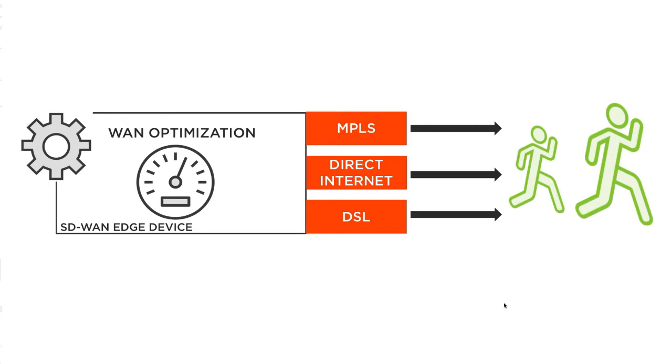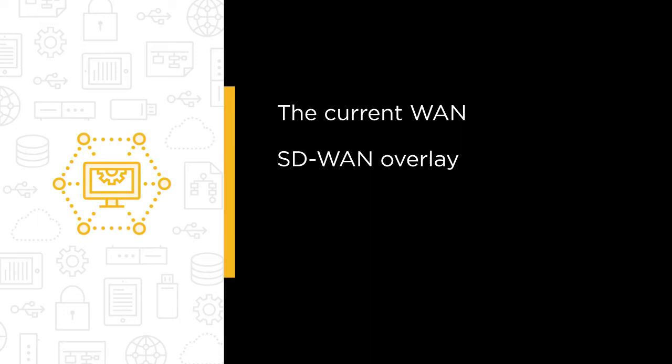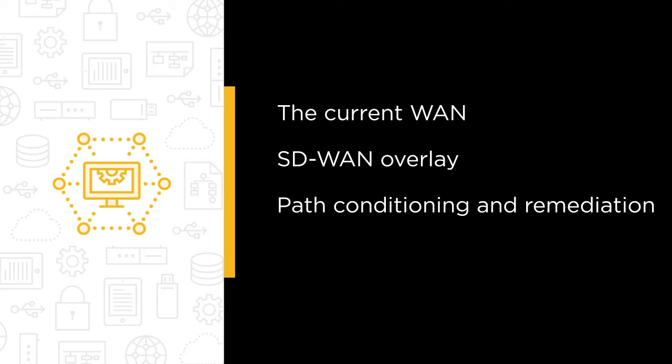Some of the major topics we will cover include the challenges with the current WAN and the environmental changes forcing us to rethink the WAN architecture, the SD-WAN overlay and per-application topologies, the various path conditioning and remediation options, and the SD-WAN architectures available either on-premise or in the cloud.